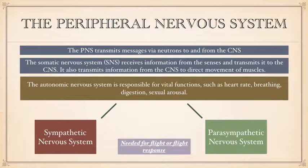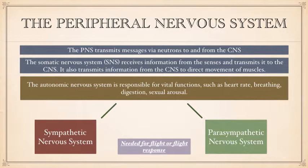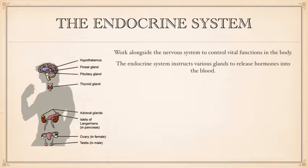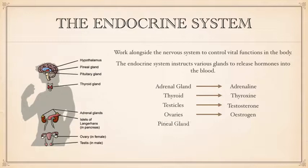I'll come on to the fight-or-flight response in a little while. We're going to look at the endocrine system first. The endocrine system, as you can see in the picture on the left, is made up of various different glands in the body, and its job is to work alongside the nervous system to control vital functions in the body. The endocrine system instructs various glands in the body to release hormones into the blood. For example, you've got the adrenal gland, which is responsible for producing adrenaline, which in turn is responsible for getting our body ready for fight or flight.